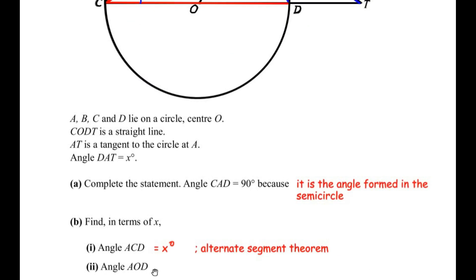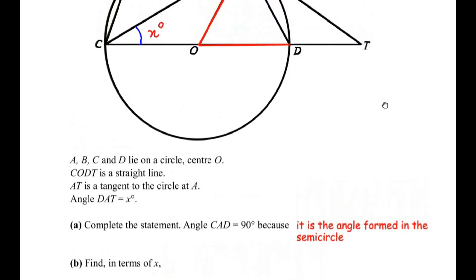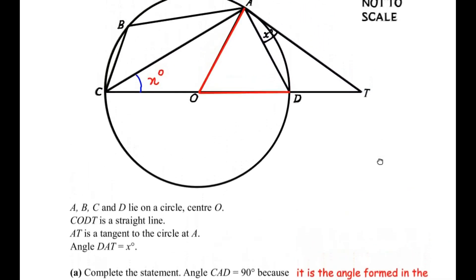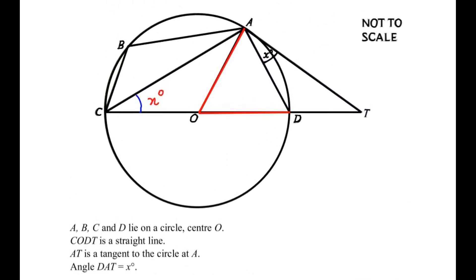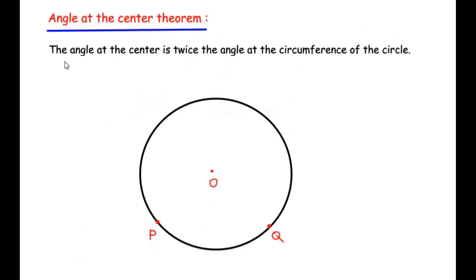Now let us look at the next angle, which is angle AOD. To find angle AOD we have to make use of a third circle theorem, which is the angle at the center theorem. It states that the angle at the center is twice the angle at the circumference of the circle.